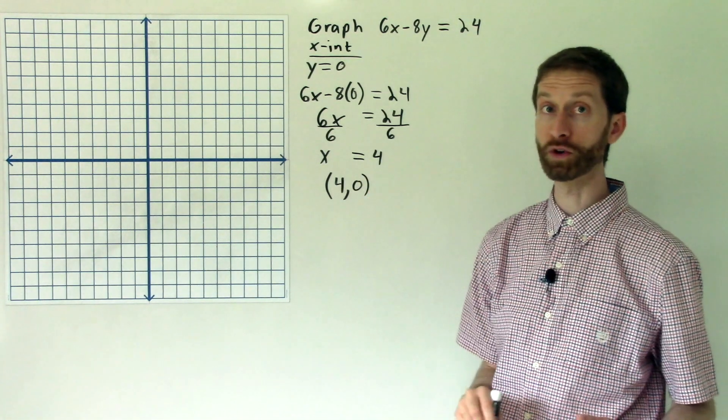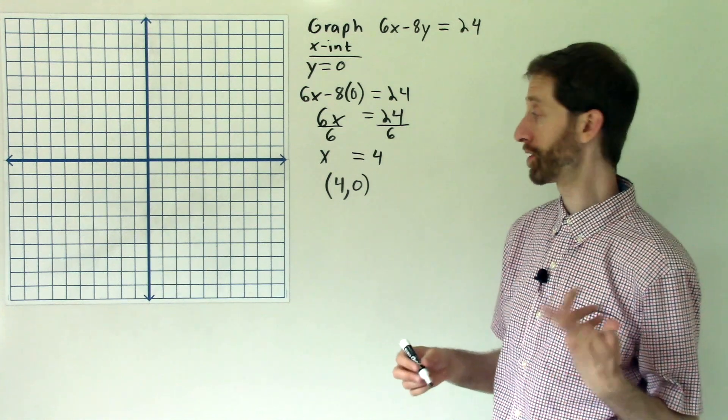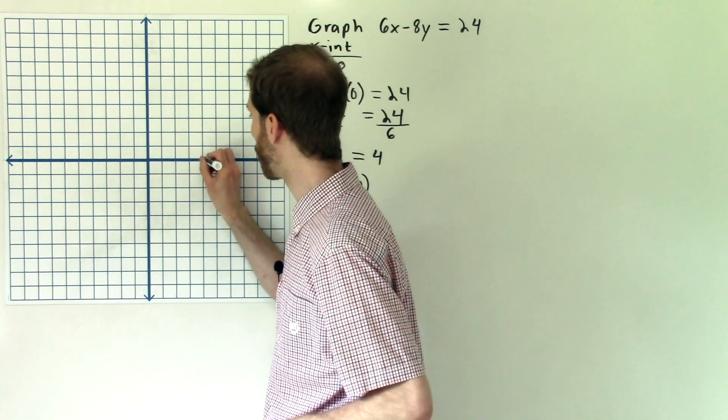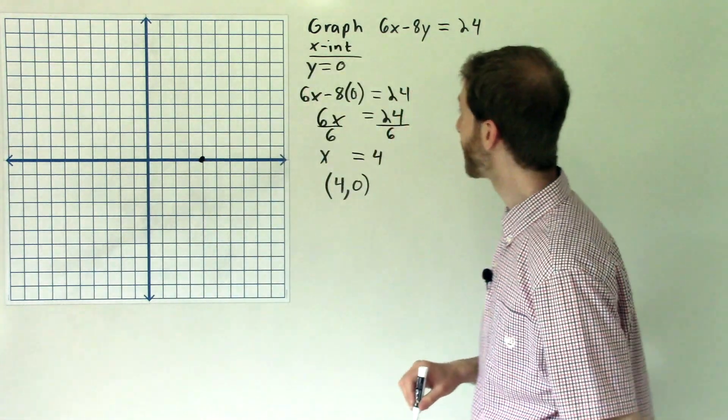So your x-intercept is 4, 0. All you got to do is graph that point: over 4, up 0. So over 1, 2, 3, 4.